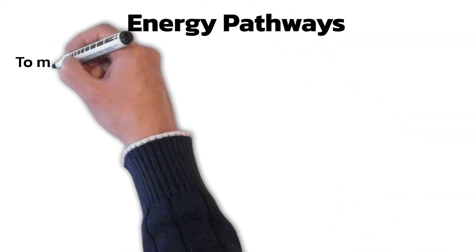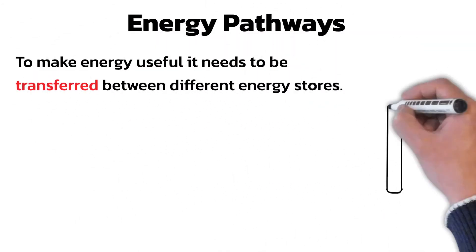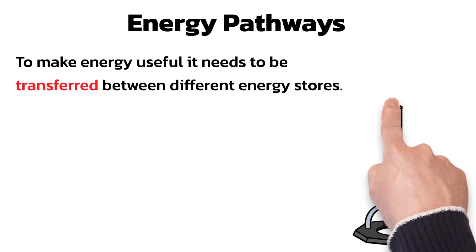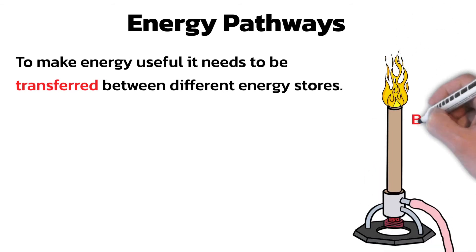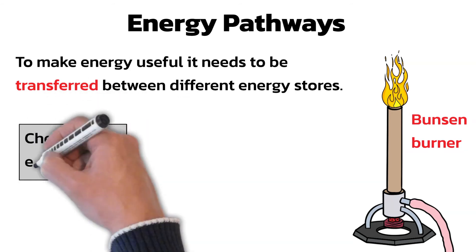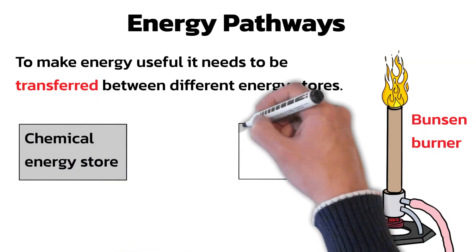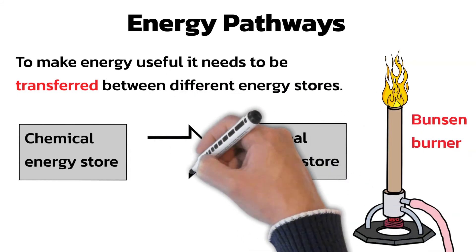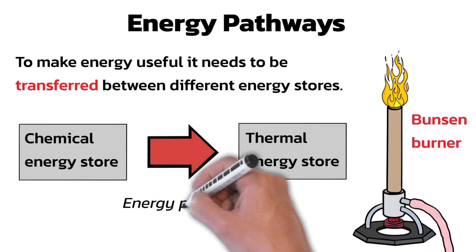Energy Pathways. To make energy useful it needs to be transferred between different energy stores. For example, a Bunsen burner transfers energy from the chemical energy store in gas to the thermal energy store. This transfer is via an energy pathway.